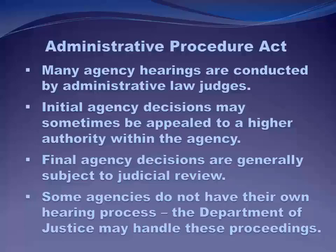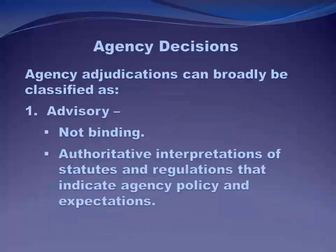Many administrative adjudications are presided over by administrative law judges, or ALJs. ALJs usually work with a particular agency and become experts in a particular kind of administrative law. In any case, agencies do have an appeal process in place. Normally there are several steps to an appeal within the agency itself, with the secretary of the agency having the final say. It's only when the agency's internal appeals process has been exhausted that a complaining party has the right of appeal to the courts.